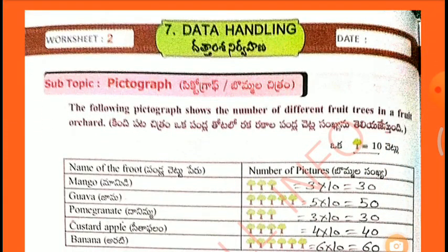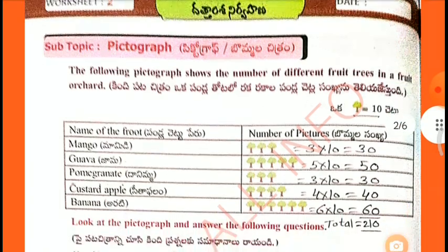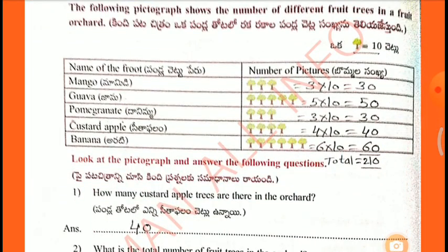Worksheet 2, Sub-Topic: Pictograph. The following pictograph shows the number of different fruit trees in a fruit orchard. Name of the fruit, number of trees. 1 tree equals 10. Mango: 3 into 10 = 30. Guava: 5 into 10 = 50. Pomegranate: 3 into 10 = 30. Custard apple: 4 into 10 = 40. Banana: 6 into 10 = 60. Total: 210.